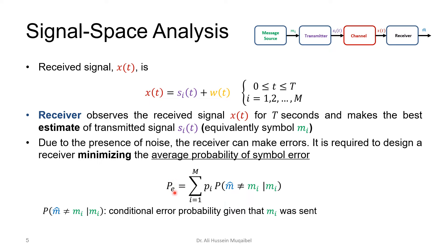The probability of error is the probability of choosing m-hat, our estimate at the receiver, to be different from the symbol transmitted, given that mi was transmitted. We scale this by the probability of mi because we average over all possible symbols. If they are all equiprobable this would be 1/M; otherwise we must find the probability of every symbol. We refer to this as the conditional error probability given that m was sent, and we need to find its minimum possible value.